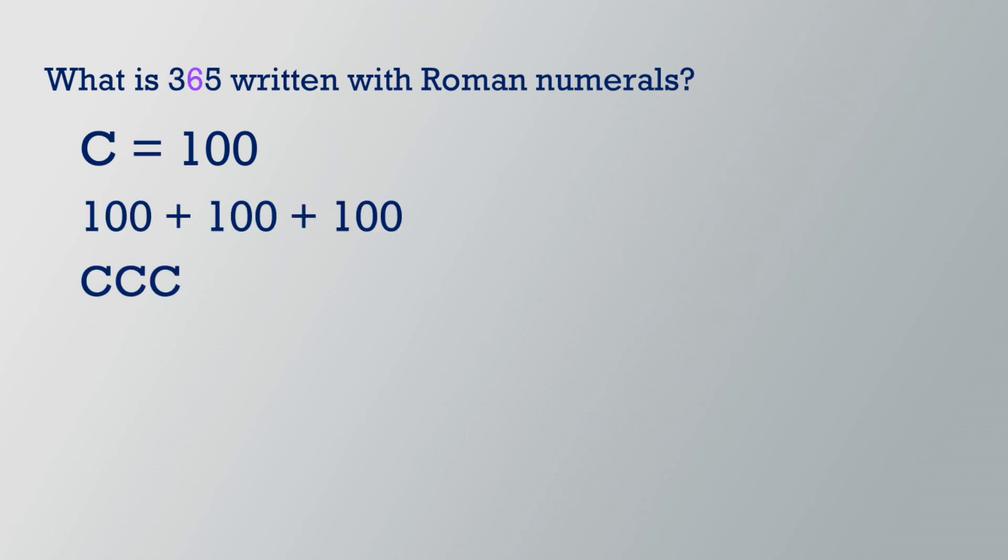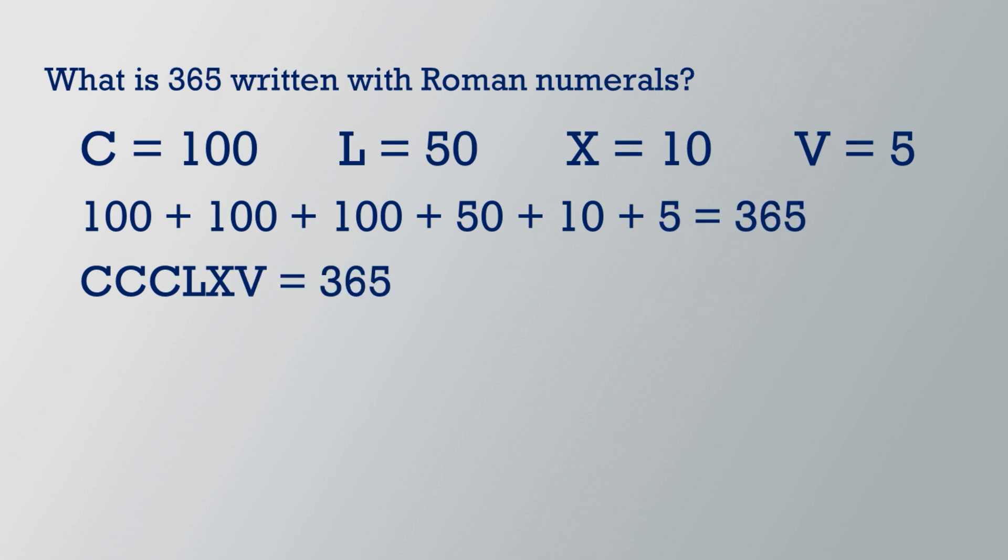Then we will look at the 6 in the tens place value. This 6 means 60 and we will use the L because it represents 50 and the X because it represents 10. So we will add an LX to our CCC. Finally, since there is a 5 in the ones place, we will use a V and add this after our X. 365 written as a Roman numeral is CCCLXV.